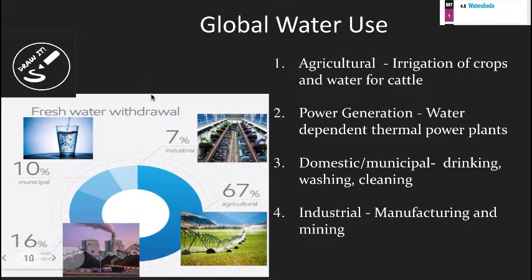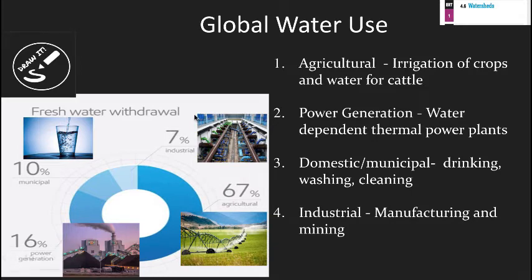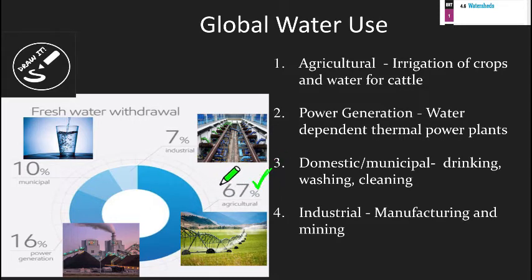Our next section is on global water use — where does all this water go? Of this small percent of fresh water we have access to, what do we do with it? There are four major designations for where we put our water worldwide. The first and most primary one is agriculture — 67%, often rounded to 70% — used for agricultural purposes. Most of the water we use ends up in this category.